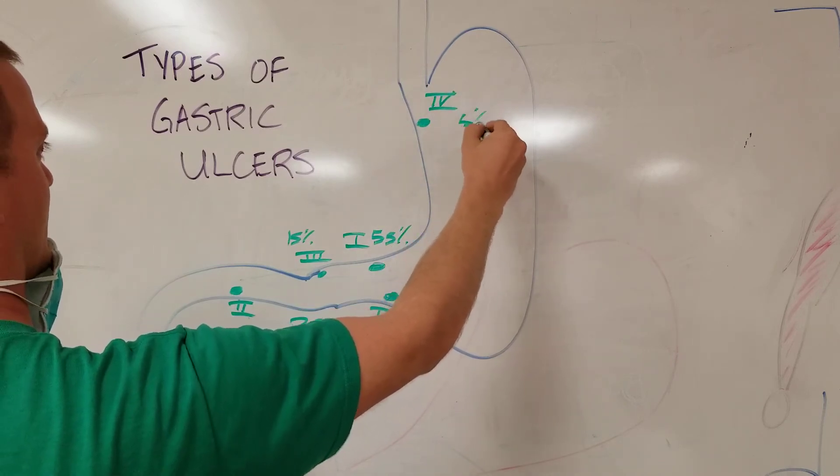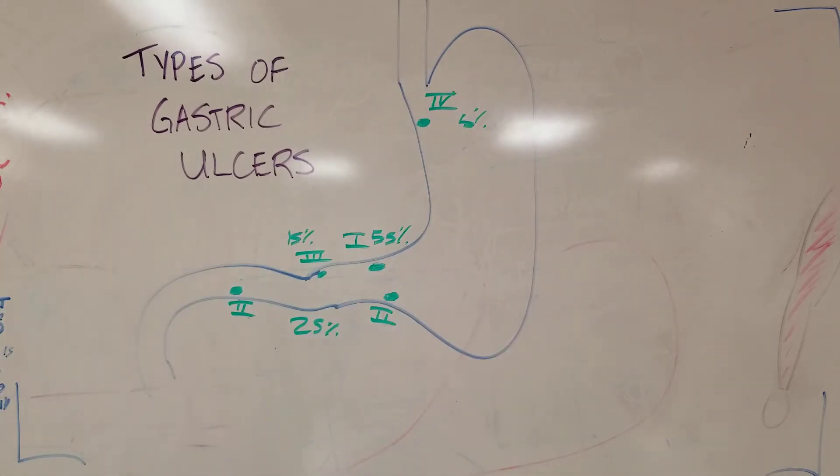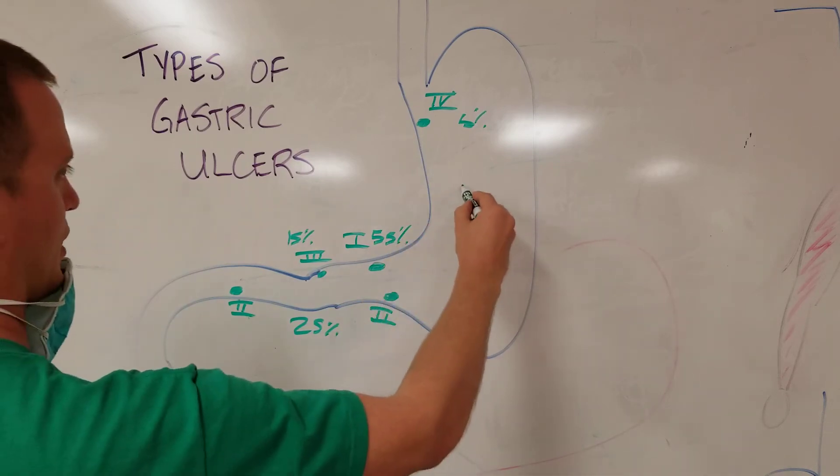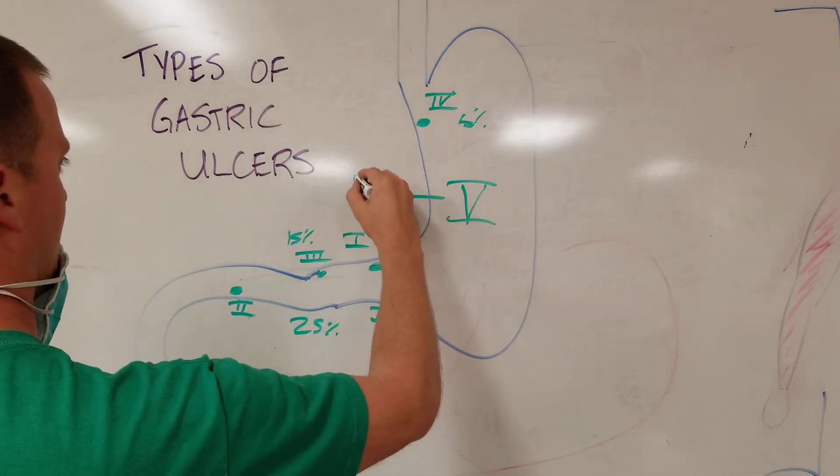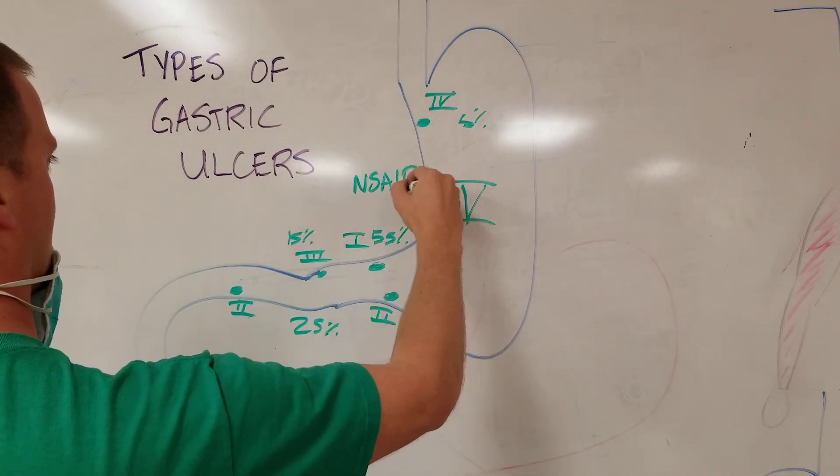That has a relative prevalence of about 5%. And then type 5 can be anywhere throughout. That has an unknown prevalence. Type 5 is the one that's associated with NSAID induced gastropathy.